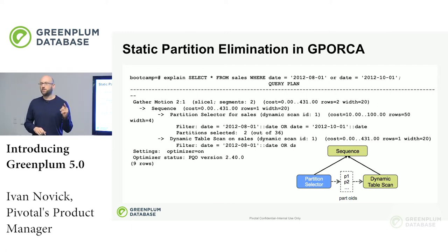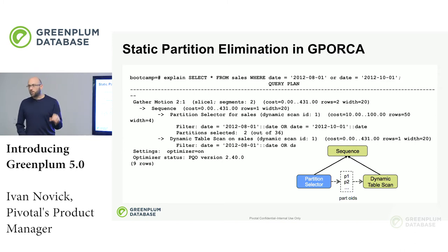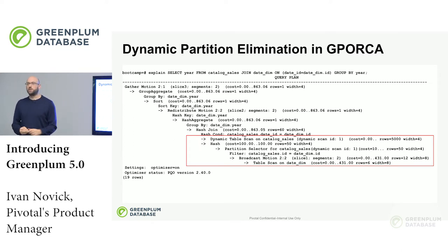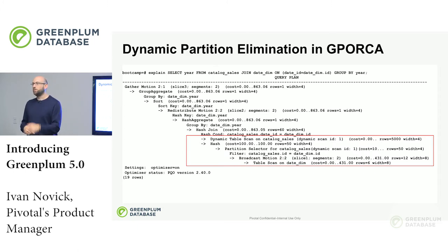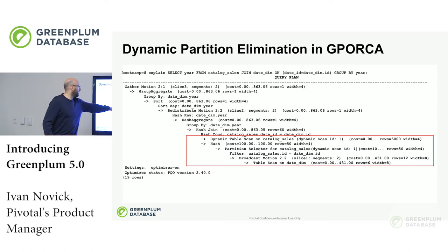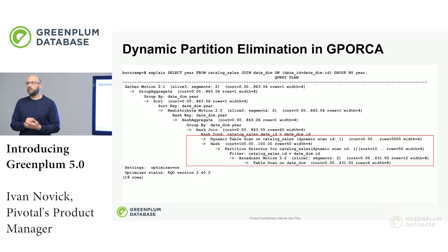There are two kinds of partition elimination: static and dynamic. Static means the query directly says 'date equals X' — the optimizer sees it up front, filters them out, and doesn't read that data from disk. Dynamic means as part of the query, it generates information about which partitions we care about, and then before reading this huge table, it knows which partitions to read. That's dynamic partition elimination. You can see in the plan we've got a dynamic table scan on the partition table. That is the key to cutting down the data size we're going to process and making it go fast.